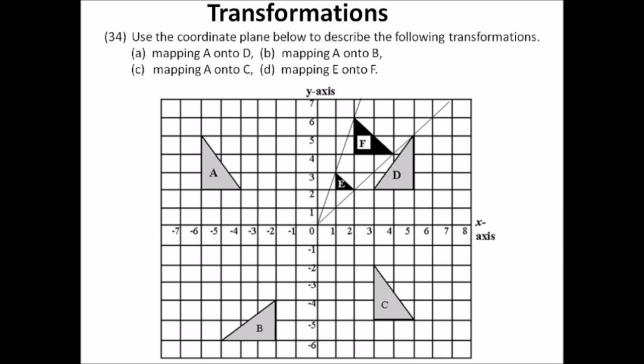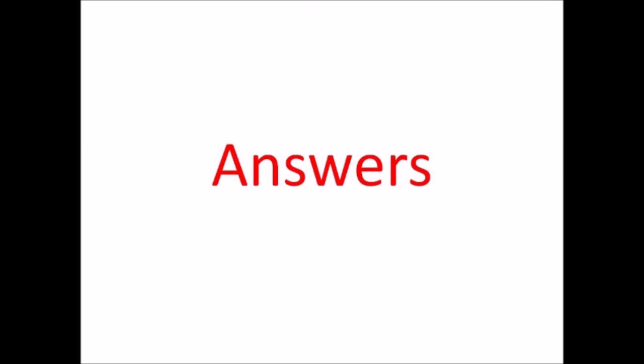Number thirty-four: transformations. Use the coordinate plane to describe the following: a) mapping A onto D; b) mapping A onto B; c) mapping A onto C; d) mapping E onto F — the lines are provided to help you with that one. We're dealing with reflections, rotations, translations, and dilations. You must write your descriptions in the correct way. Answers are upcoming — let's see what you did on this test.